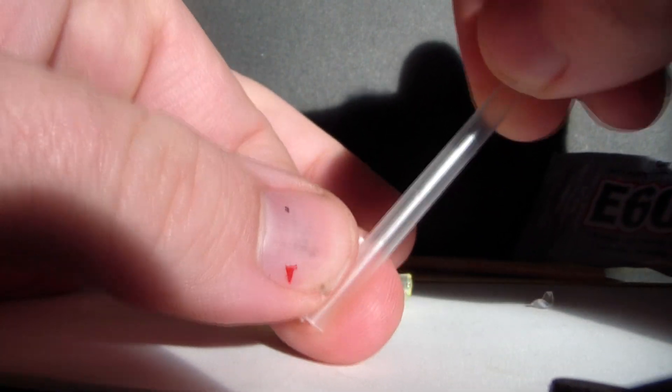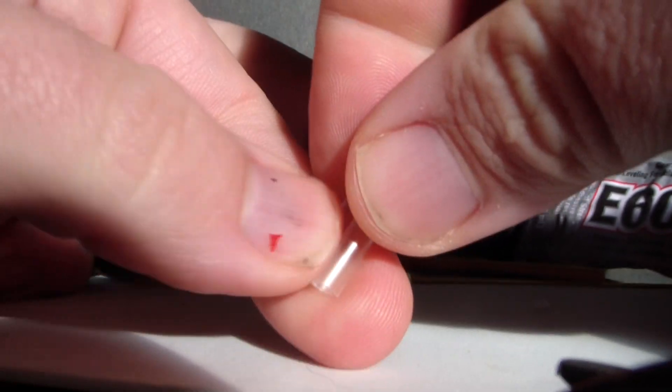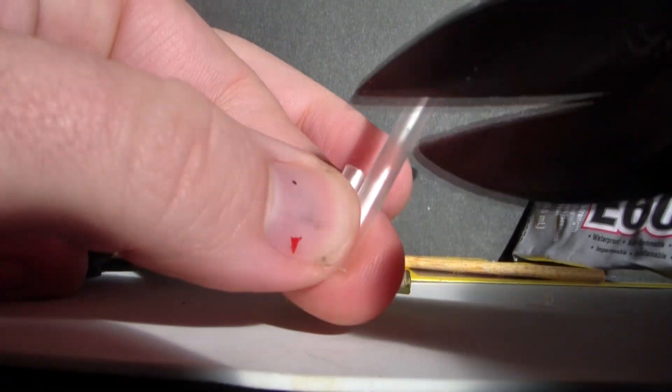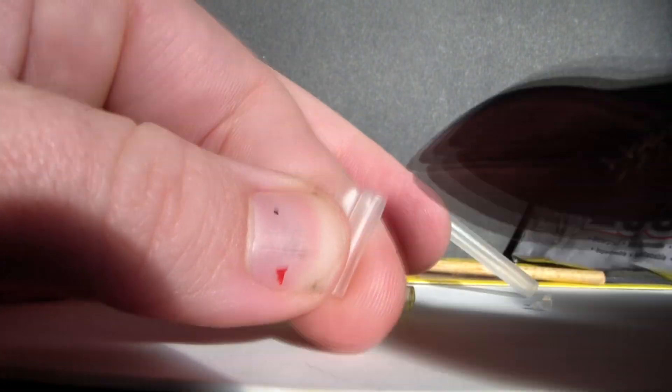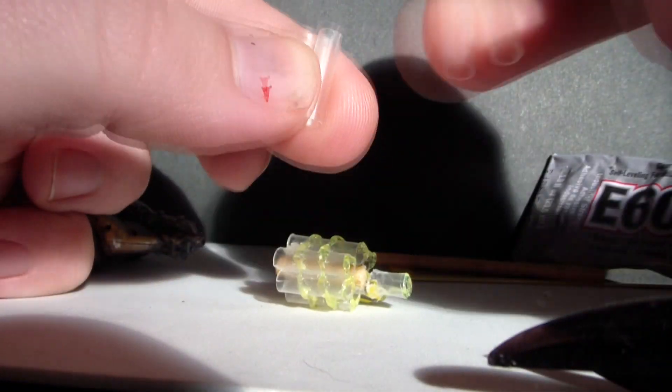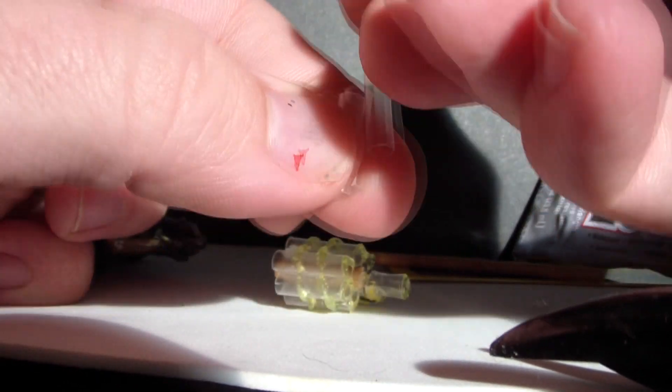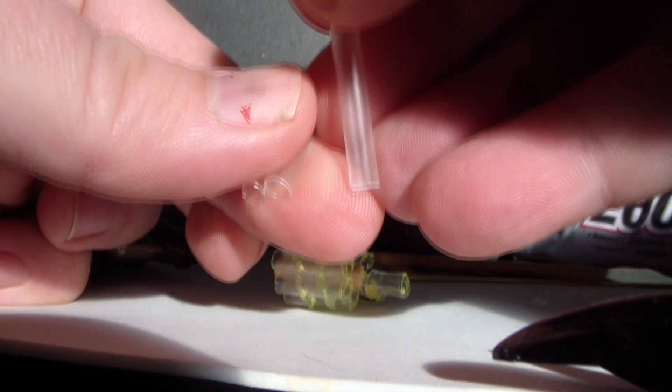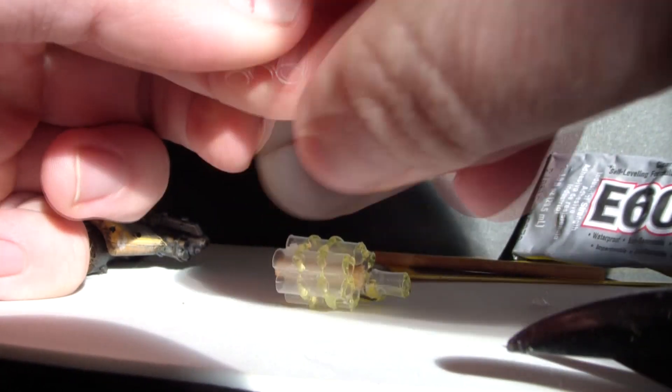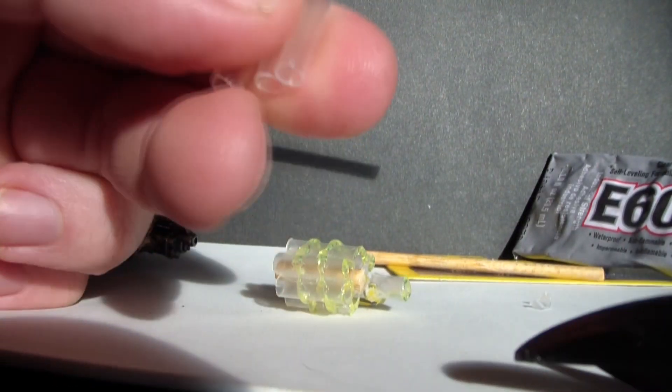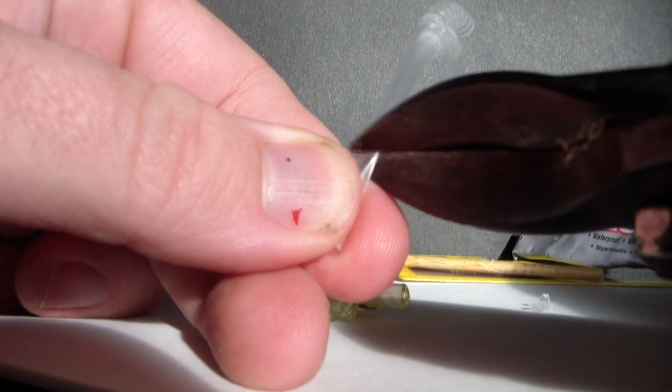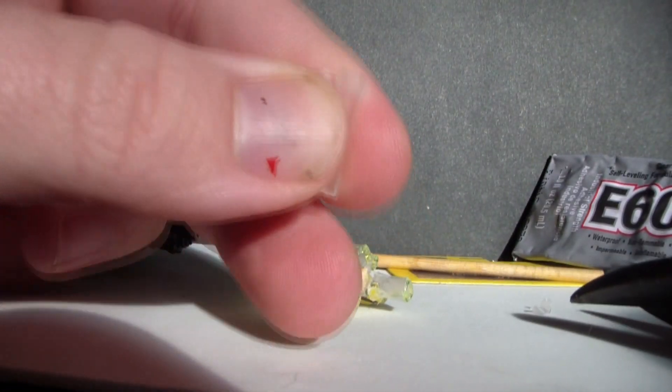Might want to fiddle with this a little bit. Get yourself a couple of these straws in case you mess up the first couple cuttings. Now what we're trying to do here is decide what our front and our back of the gun is gonna be, cause we're not gonna be able to cut this completely even and neat. But that's alright.